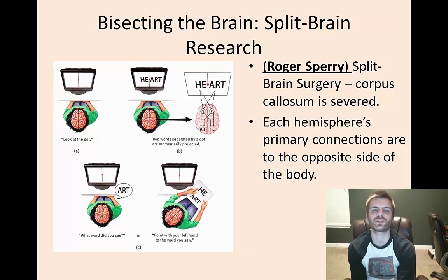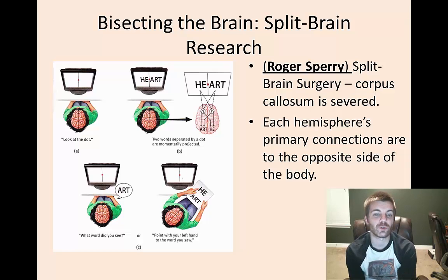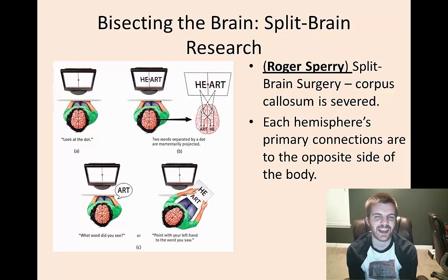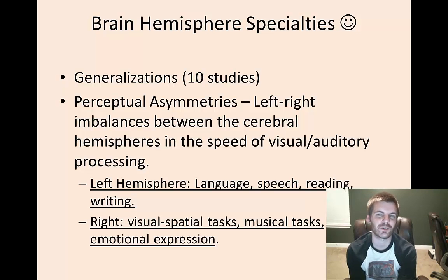The two words were separated by a dot and momentarily flashed in front of the patient. When asked what word they saw, their verbal response was 'art.' But when asked to point to the word using their left hand, they indicated 'HE.' This highlights each hemisphere's dominance — whether excelling at visual-spatial tasks or at language production — giving us an understanding of different hemispheric specialties, including perceptual asymmetries.